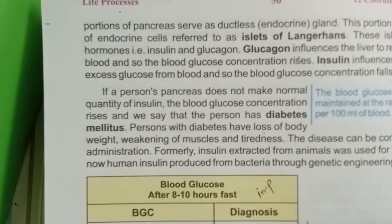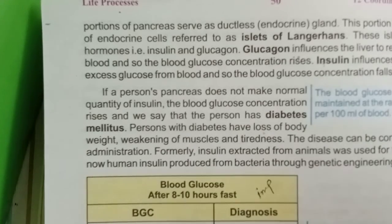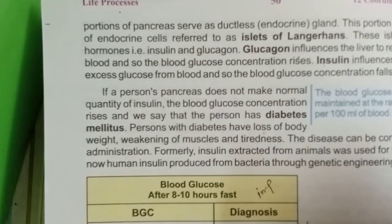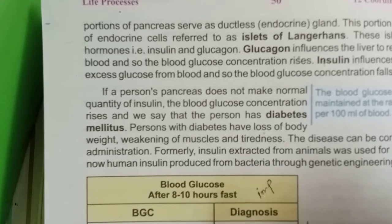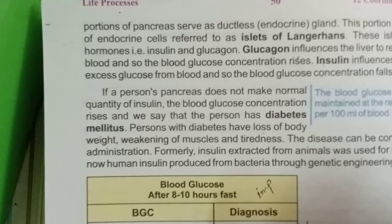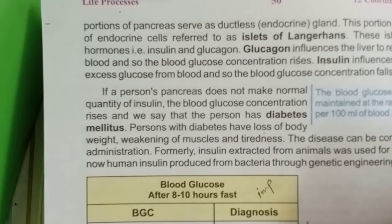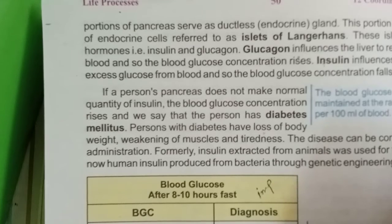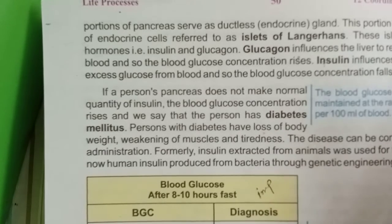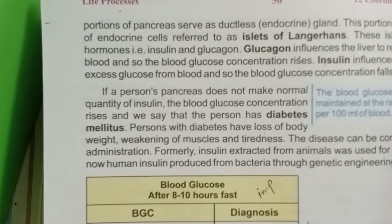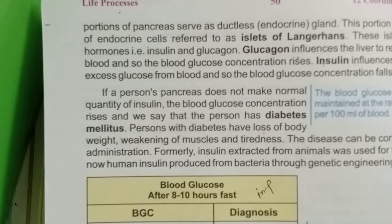The sex hormones include testosterone, which is secreted by the testes. Testosterone is responsible for male secondary characteristics such as body hair development and voice changes. The female sex hormones are estrogen and progesterone, which are responsible for female secondary characteristics such as the development of breasts. That is all for the endocrine glands.